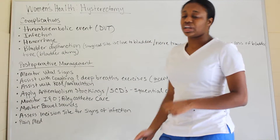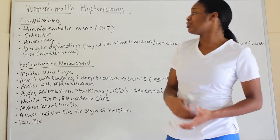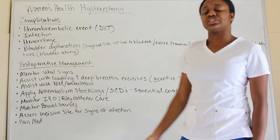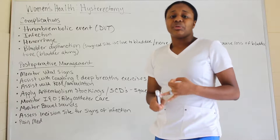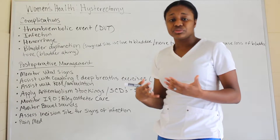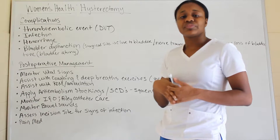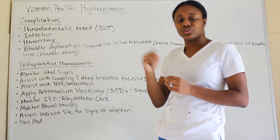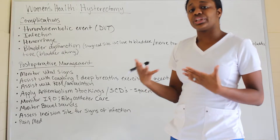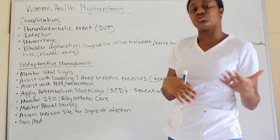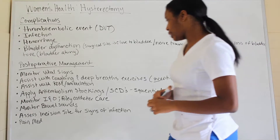Monitor input and output (I&Os) and provide Foley catheter care. These patients will have a Foley due to temporary bladder dysfunction, so keep it clean to prevent infection since they already have an incision. Drain it as scheduled. The Foley can last up to 30 days — after that, remove and insert a new one — but most patients will regain bladder function before that.